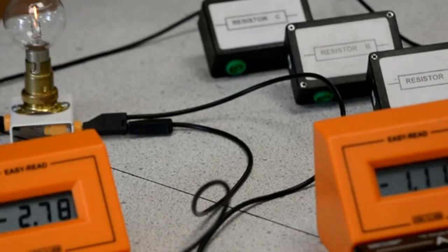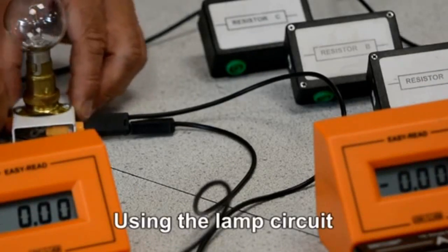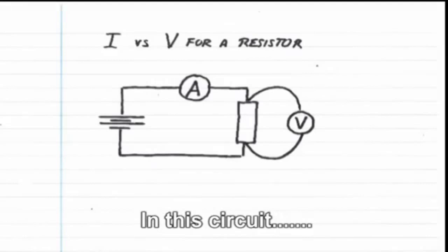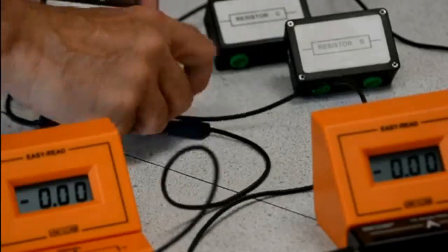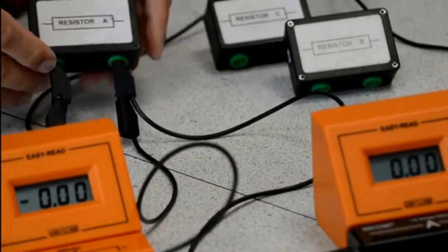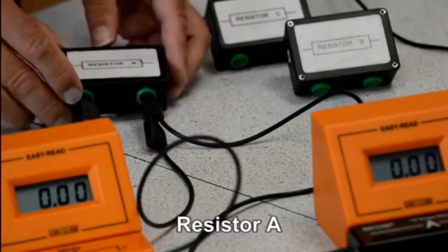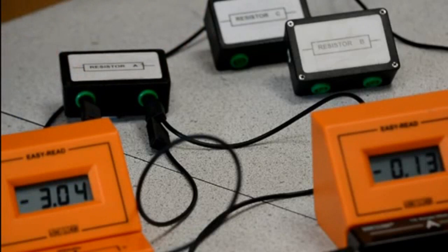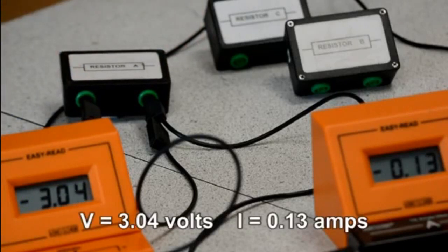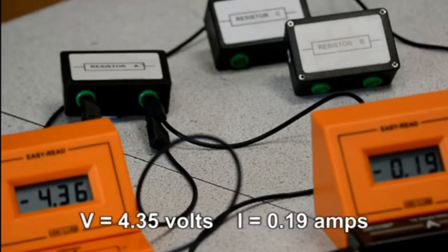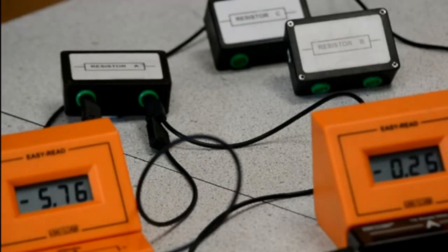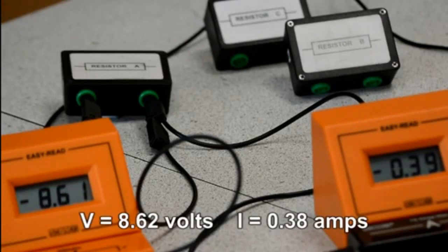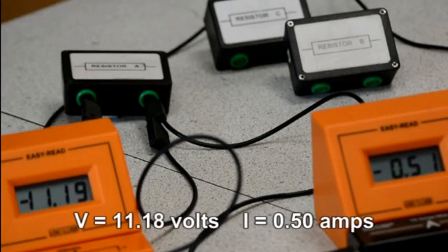Measuring the current flowing through a lamp and a resistor, and the potential dropped across them, are part of a core practical. In this video, we're more interested in the technique than in the results. So using the same circuit, we replace the lamp with one of three resistors: resistor A, B, and C, starting with resistor A. Again, we switch on the power supply and record the values obtained. Turning the dial on the power supply, we can obtain five more readings of potential difference and current. Stop the video and record these if you wish, but a full set of results can be found on the core practical video.